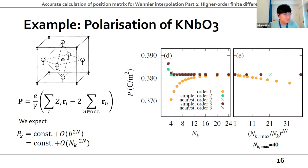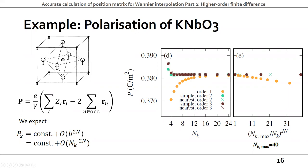A point of clarification: when doing higher-order finite difference, is that used for the construction of the Wannier functions themselves? I can imagine a situation where you apply it as a post-correction — using the first-order formula to do the minimization of the spread functional, and then using the higher-order formula afterwards to get a more accurate representation of the spread. The Wannier functions themselves converge quite quickly with respect to the K-point grid; it's just the representation of the spread that is slower.